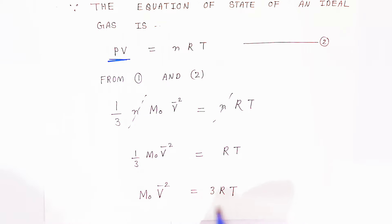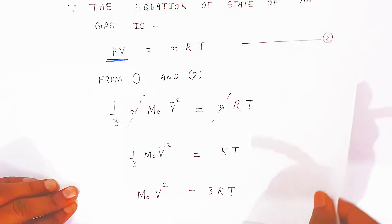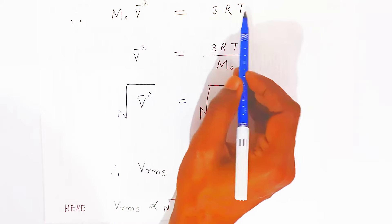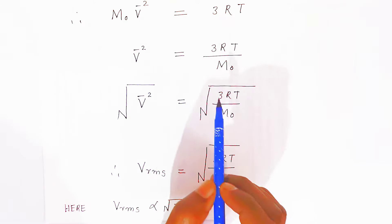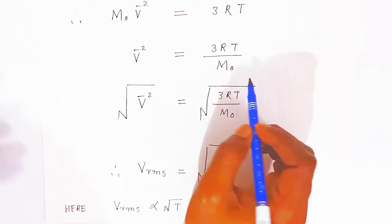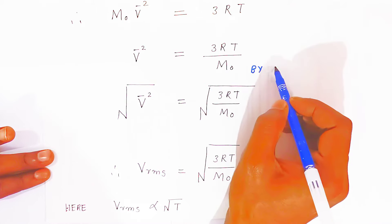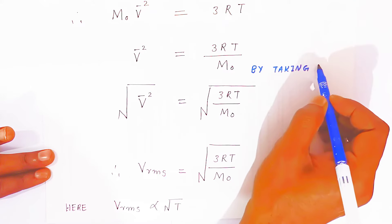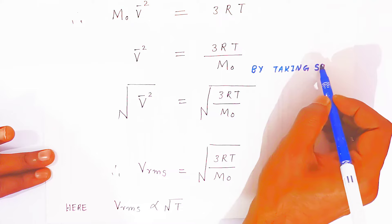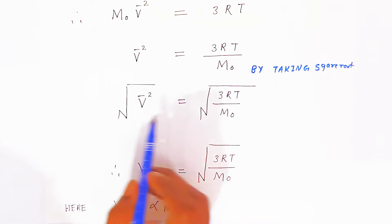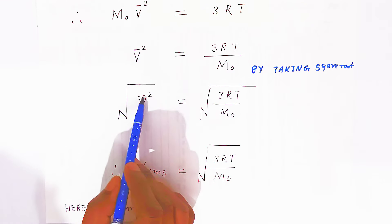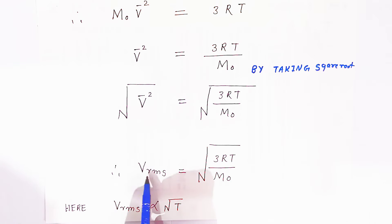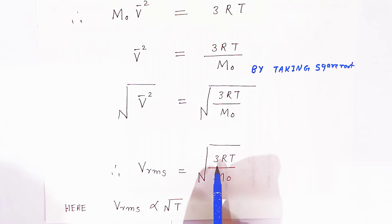The 3 goes to the other side, giving M₀ × v̄² = 3RT. Then mass M₀ divides over: v̄² = 3RT / M₀. Now, taking the square root on both sides, this square of the square root gives us the root mean square velocity: v_rms = √(3RT / M₀).